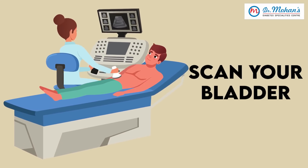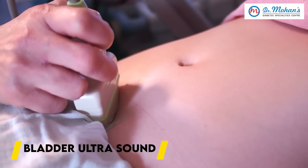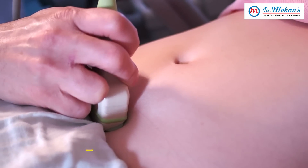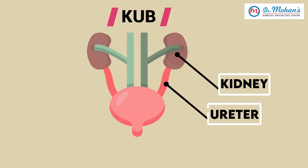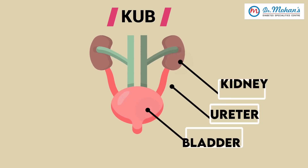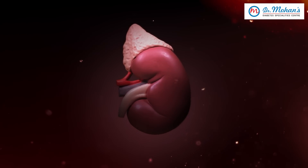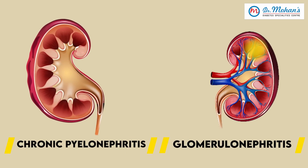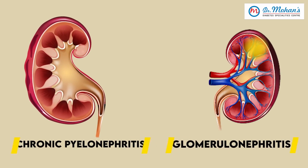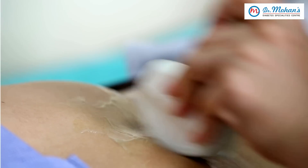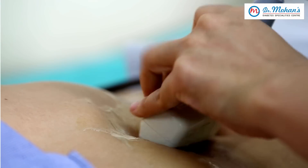We do a simple ultrasound where you keep a probe on the abdomen. We call it a KUB — Kidney, Ureter and Bladder. On a KUB you can see the kidney size. In diabetes, the kidney size is not affected even if you have kidney failure — it will still remain normal. Whereas if the cause is something else like chronic pyelonephritis or glomerulonephritis, the kidney can get shrunk. So by looking at the size of the kidney you can tell if any change is due to diabetes or due to something else.